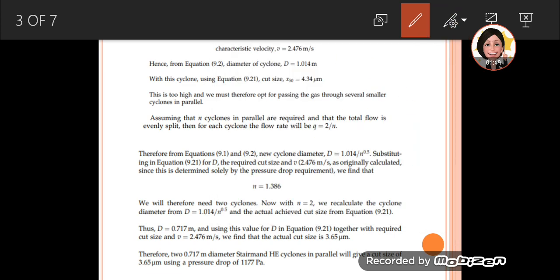Next, we use that V in equation 9.2, which relates V to the flow rate of the gas squared. We know the flow rate is 2 meter cube per second. So we know V, and we can calculate D. Now we get the diameter.